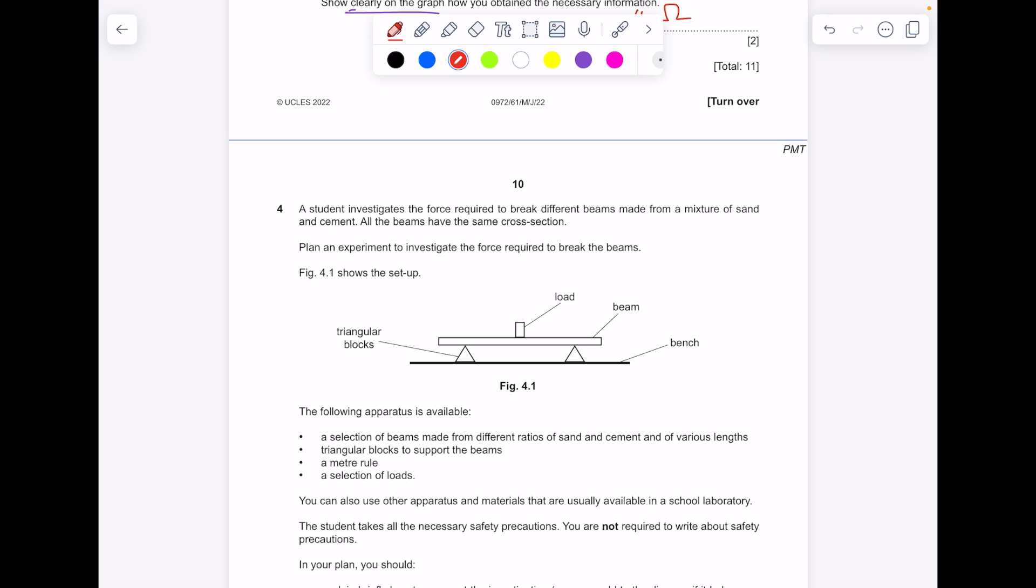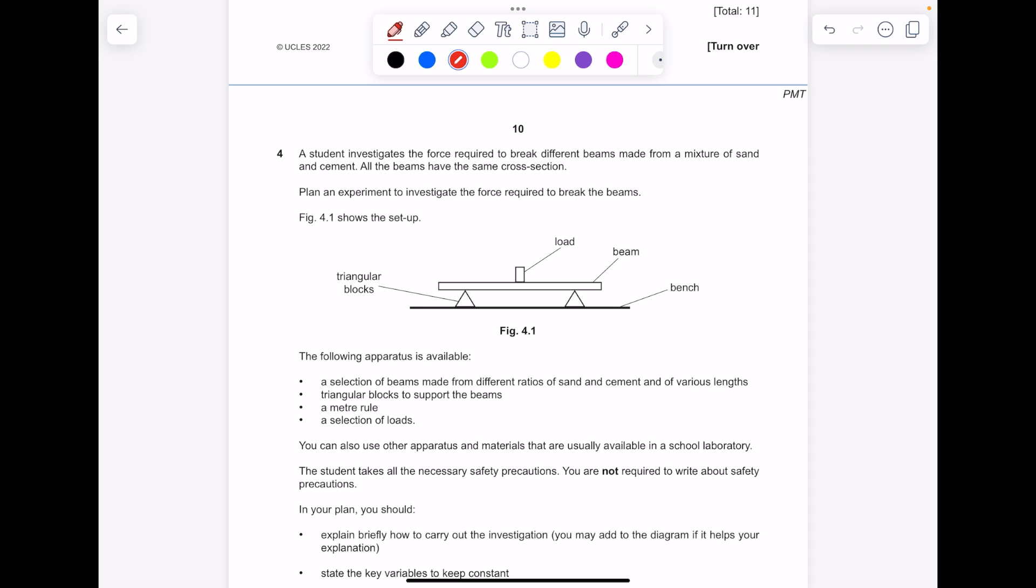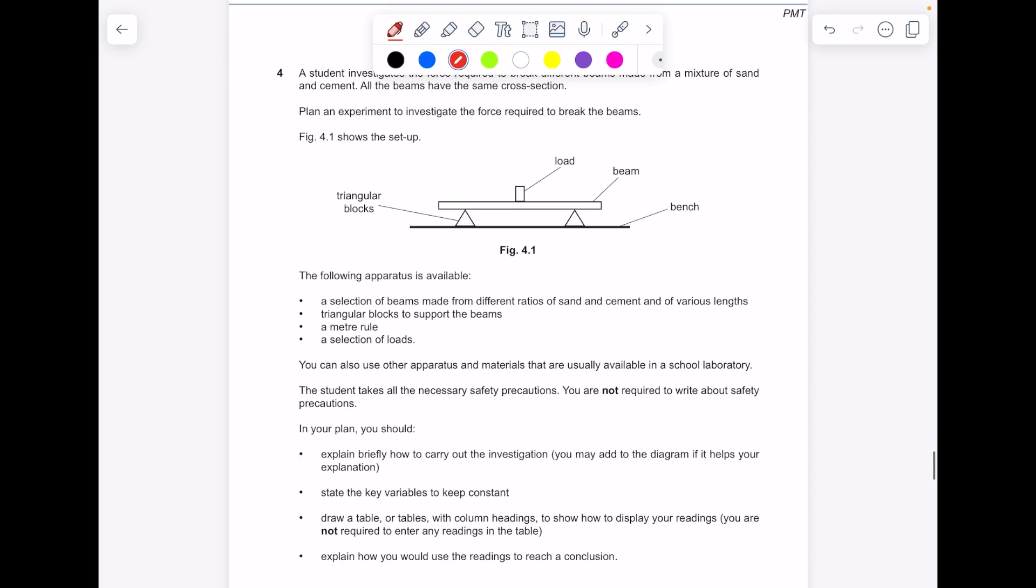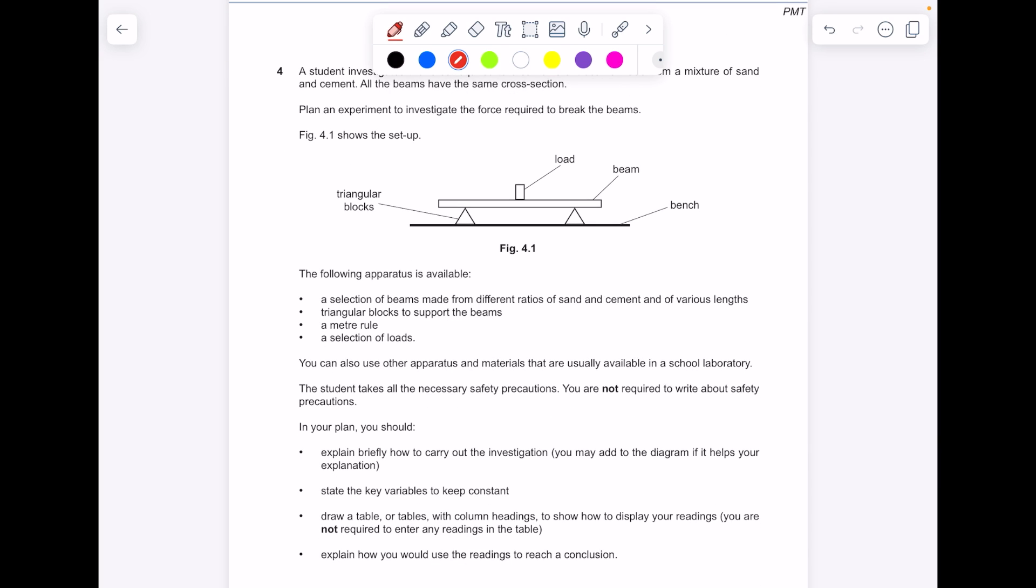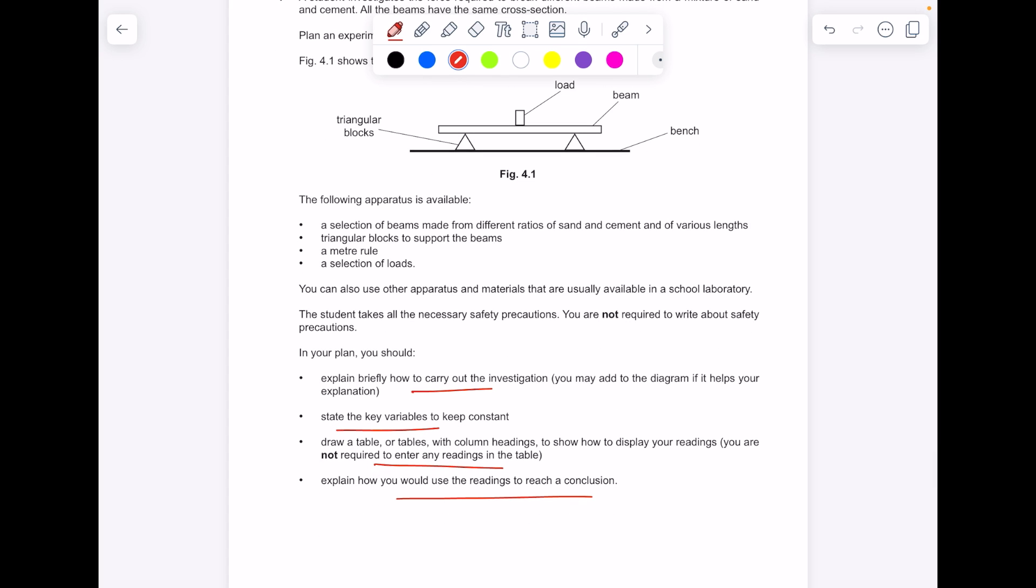The student investigates the force required to break different beams made from a mixture of sand and cement. All the beams have the same cross section. Plan an experiment to investigate the force required to break the beams. The following apparatus is available: a selection of beams made from different ratios of sand and cement and of various lengths, triangular blocks to support the beams, a meter rule, a selection of loads. You can also use other apparatus and materials that are usually available in a school lab. The student takes all the necessary safety precautions. You are not required to write about safety precautions. In your plan you should explain briefly how to carry out the investigation, include a diagram if you want to, state the key variables, draw a table or tables with column headings to show how to display your readings. You are not required to enter any readings into the table. Explain how you would use the readings to reach a conclusion. Seven marks.